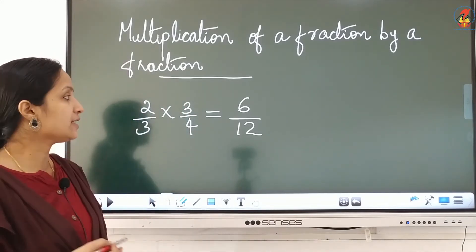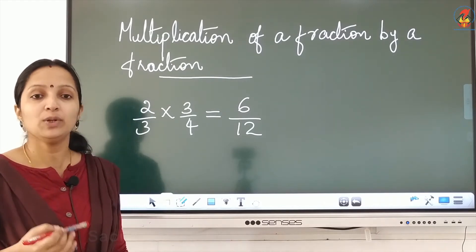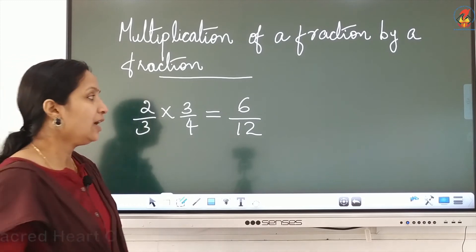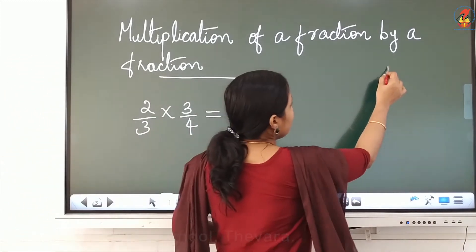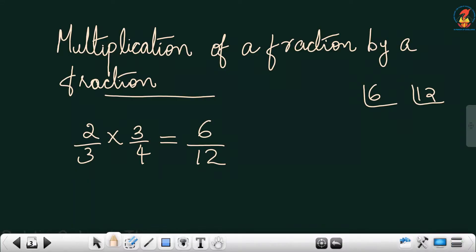One more thing: if the answer is a proper fraction — where the numerator is less than the denominator — try to convert it into lowest terms. To write the lowest term, we have to find the HCF of the numerator and denominator and then do the division.